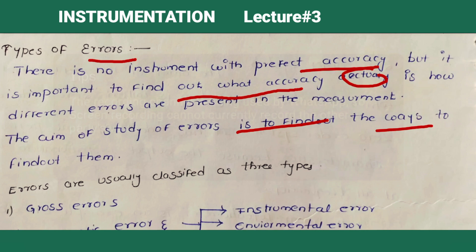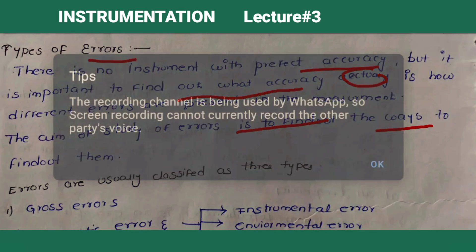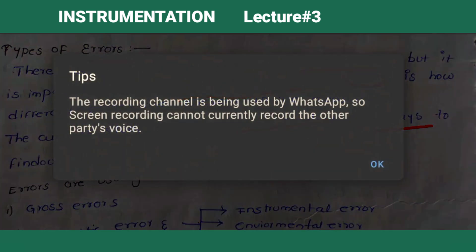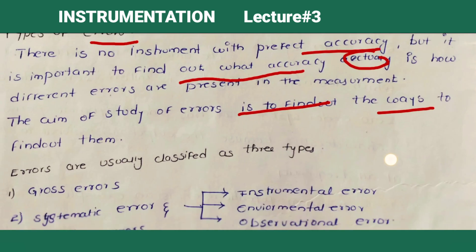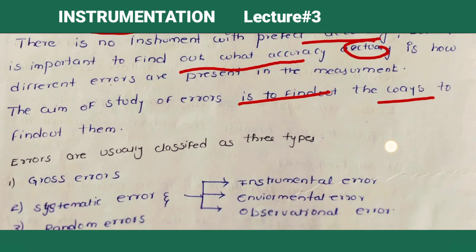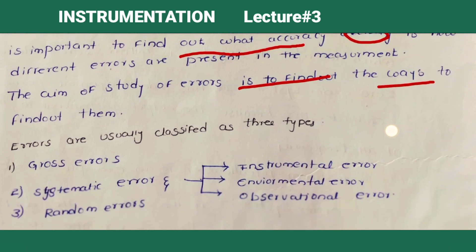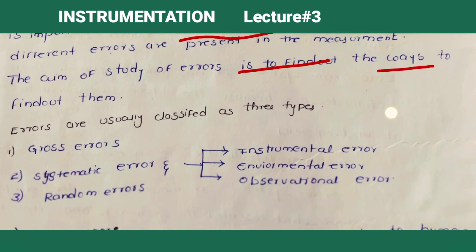Errors are usually classified into three types. Generally, the errors are three types: one is gross error, systematic error, and random errors. These three types of errors are present in instruments.